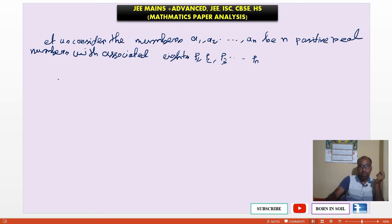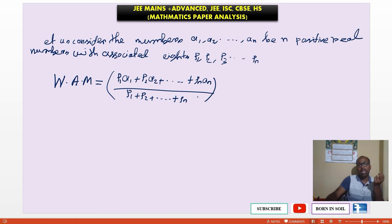p1 into a1 plus p2 into a2 dot dot pn into an, divided by sum of the associated weights p1 plus p2 up to pn, which is called weighted arithmetic mean of the above numbers.